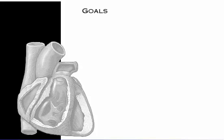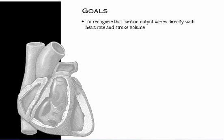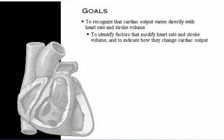Your goals for learning are to recognize that cardiac output varies directly with heart rate and stroke volume, to identify physiological factors that modify heart rate and stroke volume, and to indicate how these factors change cardiac output.